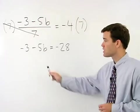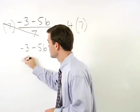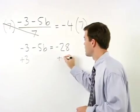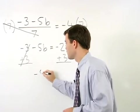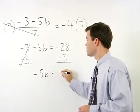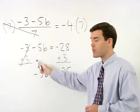Our next step is to isolate the b term by adding 3 to both sides. We get negative 5b equals negative 25. Don't forget to bring down the negative.